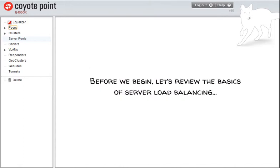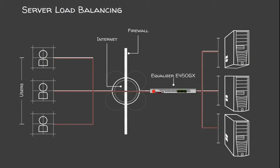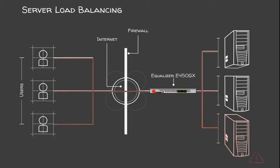Before we begin, let's review the basics of server load balancing. Load balancing improves the scalability of applications by distributing the load across multiple servers. Load balancing also offers what is called high availability. This means that if one of your servers becomes unavailable, load balancing will route the traffic load across the remaining servers. An equalizer such as the E450GX model shown is a load balancer that distributes traffic among server resources. Based on information in the IP packets or content in application requests, it makes intelligent decisions to direct the traffic appropriately.